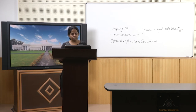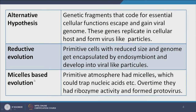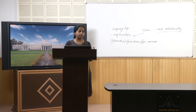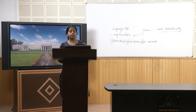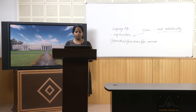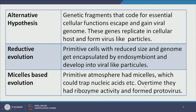A third theory is vesicle-based evolution — a wonderful evolutionary theory proposing that the primitive early Earth had many vesicles which were ideal compartments for chemistry to occur. Nucleic acids, both RNA and DNA single-stranded or double-stranded, could form inside, and there were enough amino acids to make proteins. These trapped nucleic acids eventually had the ability to translate into proteins and formed proto-viruses. So the primitive atmosphere had vesicles which could trap nucleic acids, and over time they had ribosome activity and formed proto-viruses.